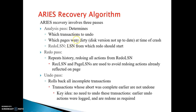These three tasks are performed in the analysis pass. The redo pass repeats history, redoing all actions from the redo log LSN. Record LSN and page LSNs are used to avoid redoing actions already reflected on the page. The last pass is undo, which rolls back all incomplete transactions. The key idea in the undo pass: earlier undo actions were logged and are redone as required.